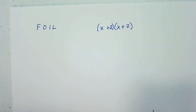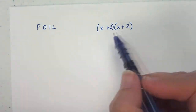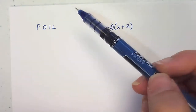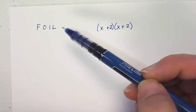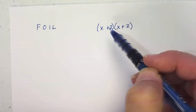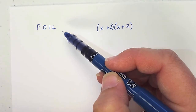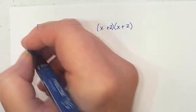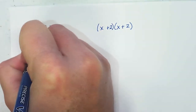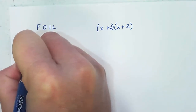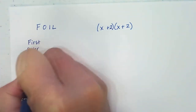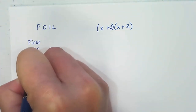Many of you have seen this in math class. They used to teach how to solve expressions using the acronym FOIL, which stands for First, Outer, Inner, and Last.